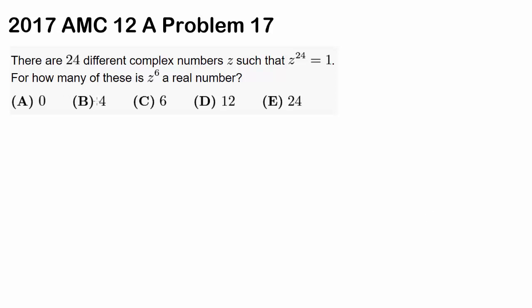Let's try out this question from 2017 AMC 12A, problem 17. There are 24 different complex numbers Z such that Z to the 24th is equal to 1. For how many of these is Z to the 6th a real number? So we want Z to the 6th to be real and Z to the 24th to be equal to 1.